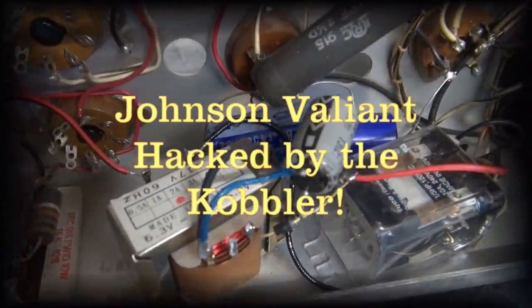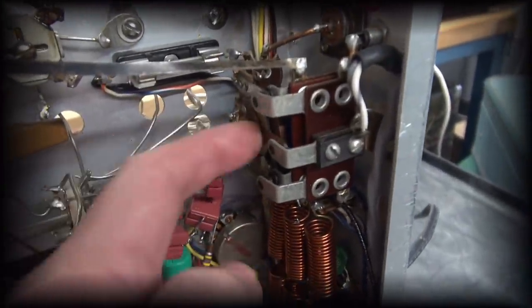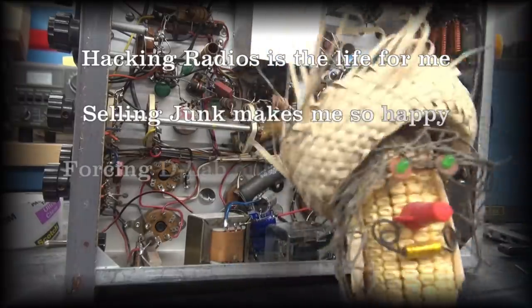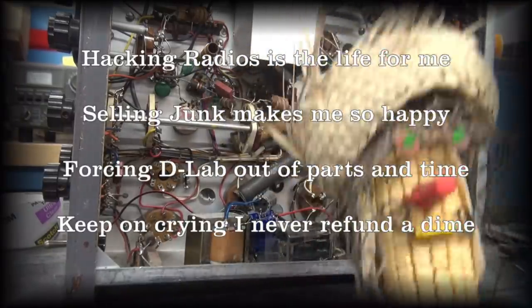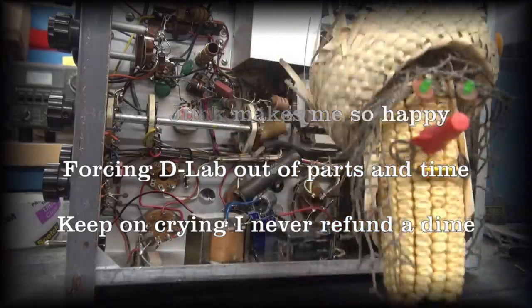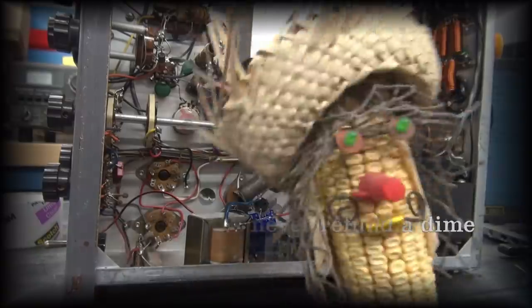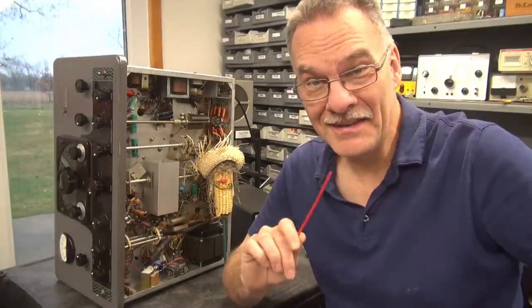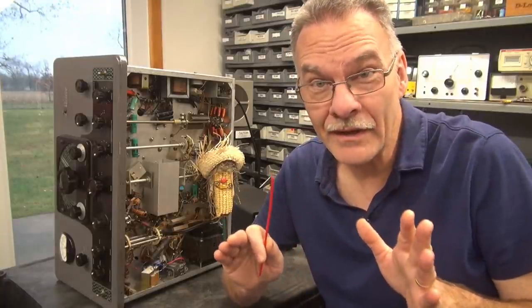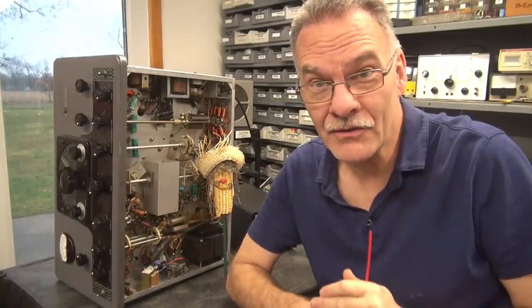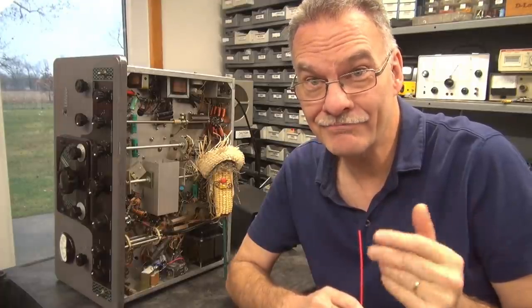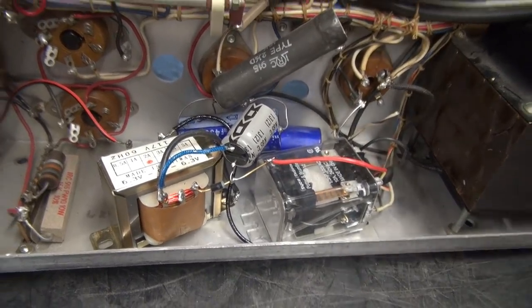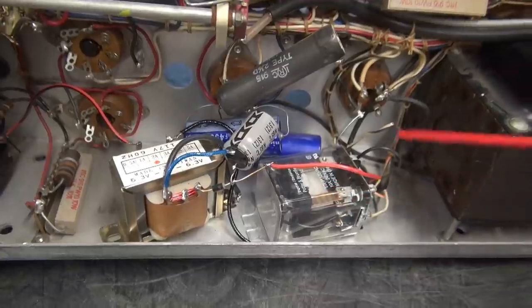All right, so another Valiant hacked by the cobbler. In this case it appears he added a whole bunch of relays to do the TR switching of the Johnson Valiant. So let's take a peek inside and see what uncobbling I must do. All right, so here is the main area of concern, this little jumbled up mess.